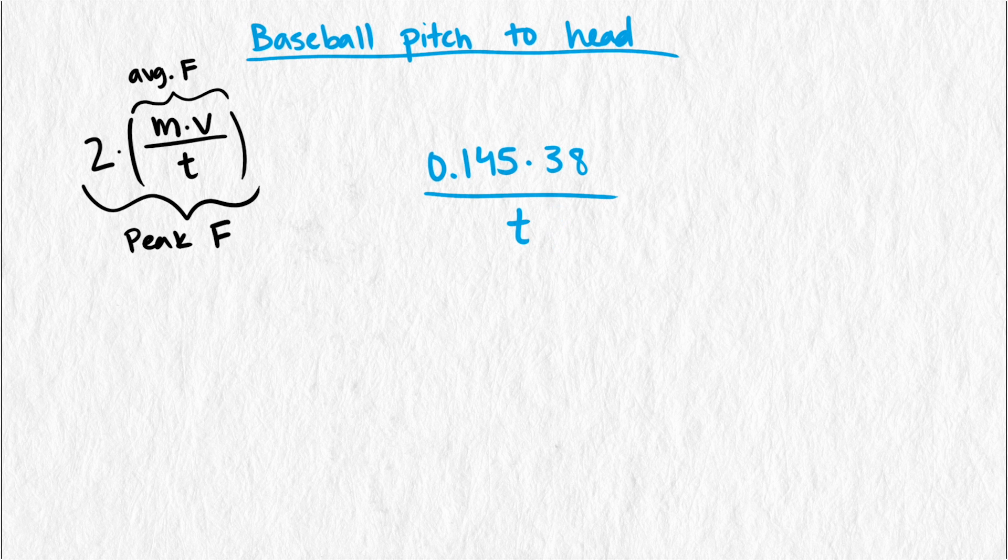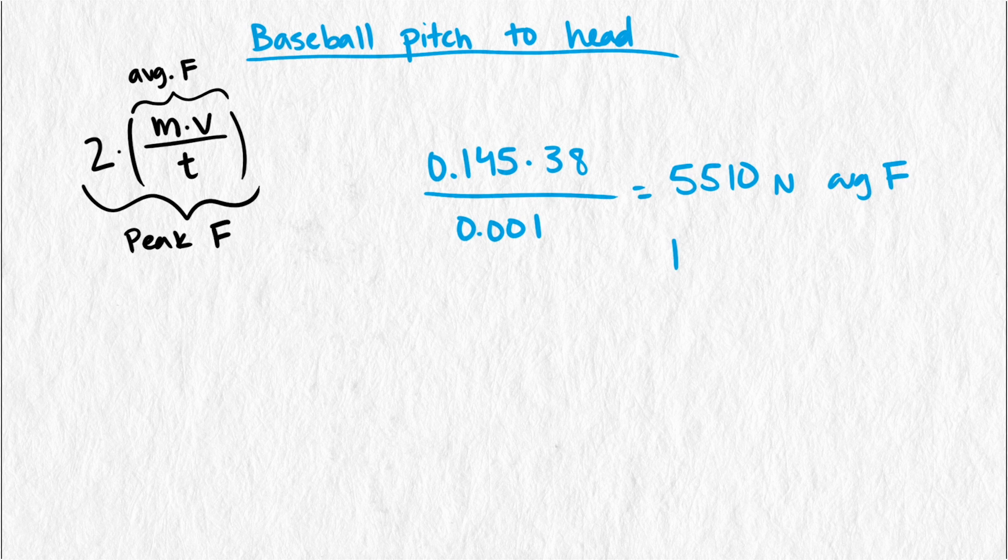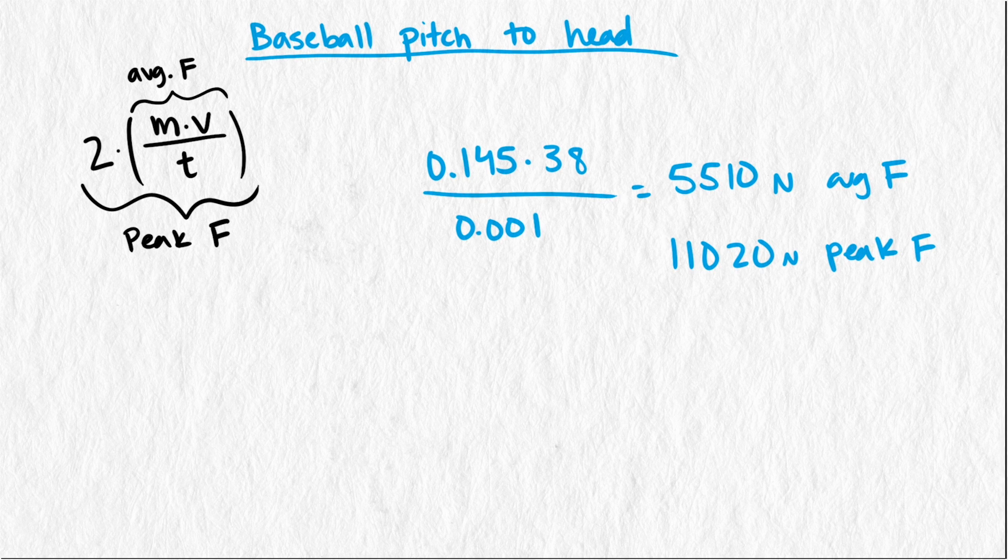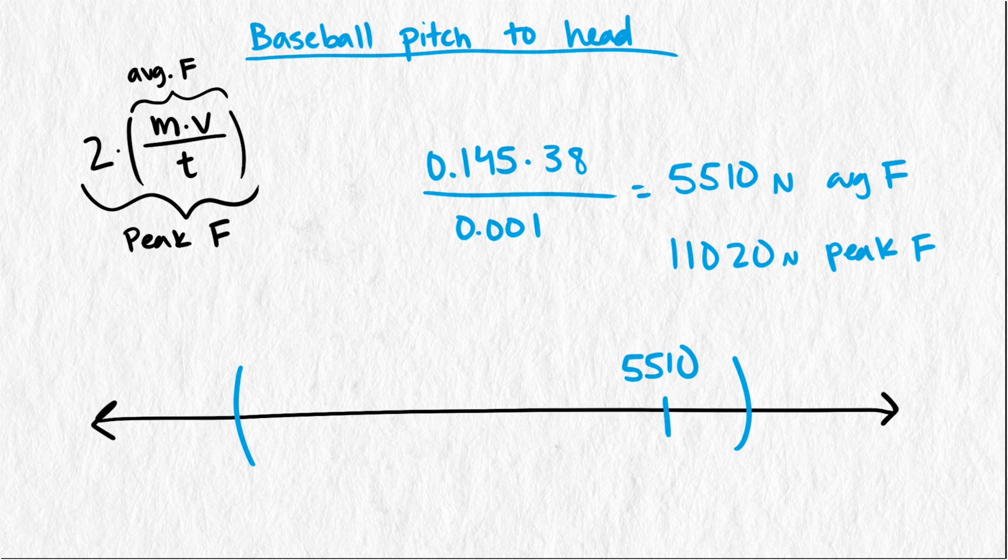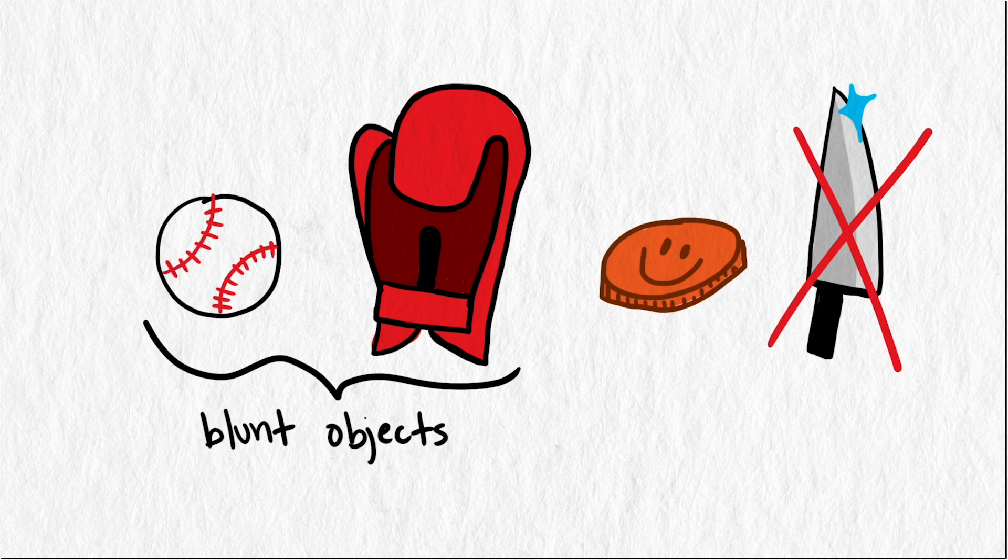Putting these values into our impact force equations, we get an average impact force of 5,510 newtons and a peak impact force of 11,020 newtons. We need to build a rough range of impact force needed for death to occur though. Maybe these values are on the high end, maybe they're on the low end. So let's pick another scenario where blunt objects to the head have caused death.